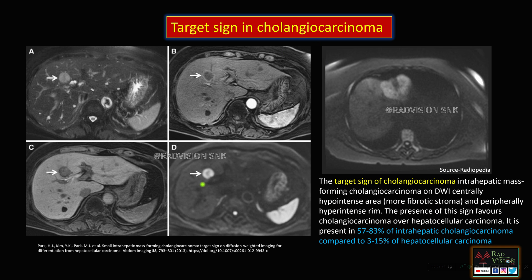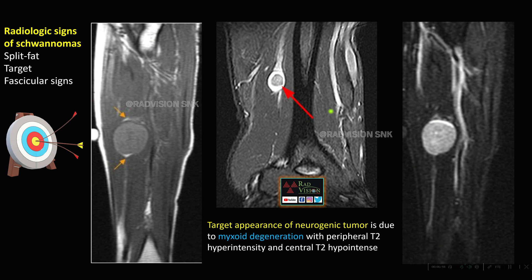Target sign can also be seen in cholangiocarcinoma. On diffusion weighted imaging, you can see diffusion restriction with a central hypointense area, seen in intrahepatic mass-forming cholangiocarcinomas. Whenever you are in doubt whether this is cholangiocarcinoma or HCC, look for this target sign on DWI: peripheral hyperintense restricted diffusion with a central hypointense area due to fibrotic stroma. This is seen in 57 to 83 percent of cholangiocarcinomas compared to only 3 to 15 percent of hepatocellular carcinomas.